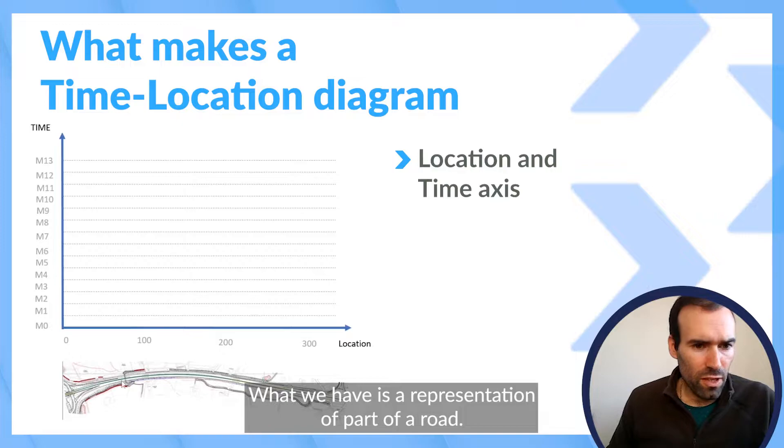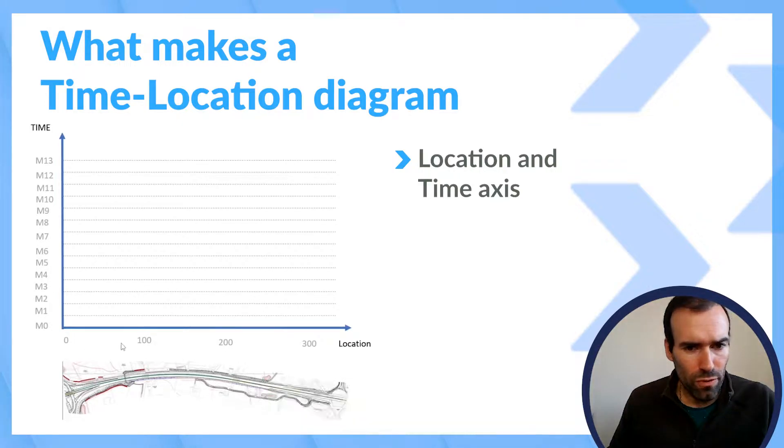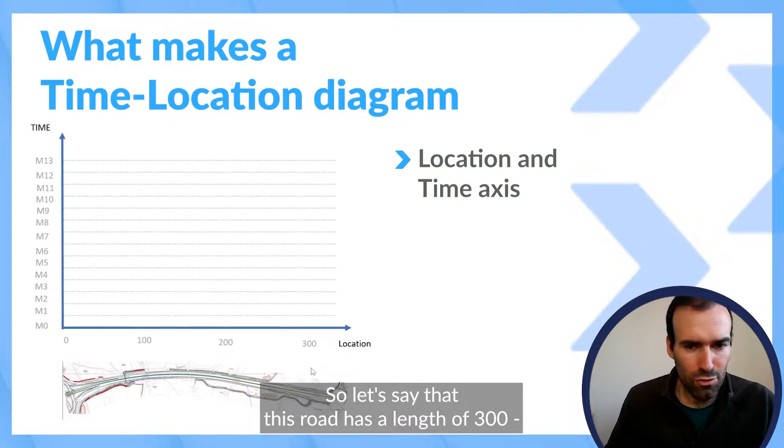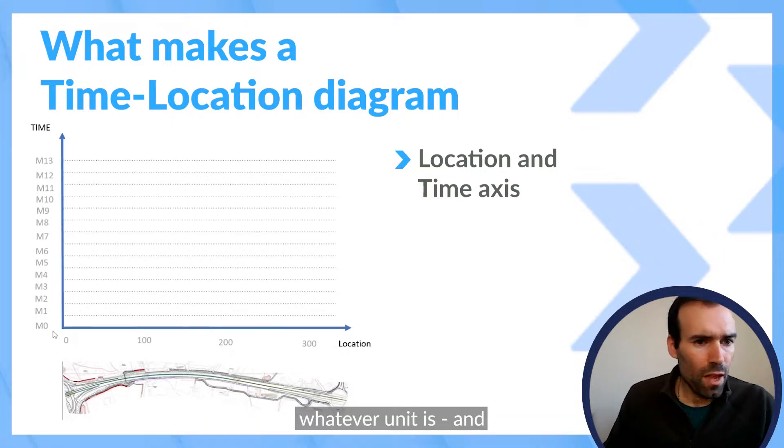What we have is a representation of a part of a road. Let's say that this road has a length of 300 units and it's going to be developed in approximately 13 months.